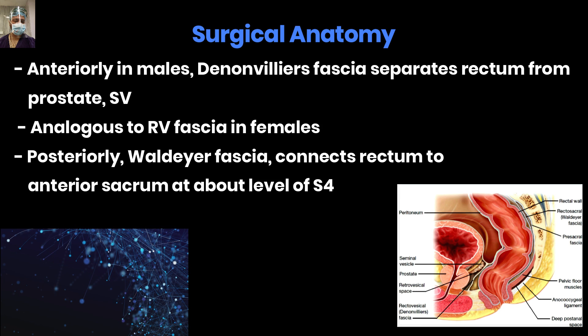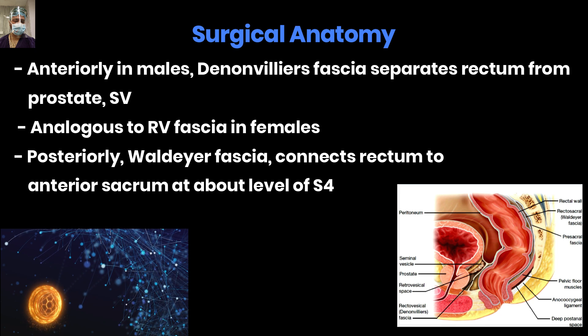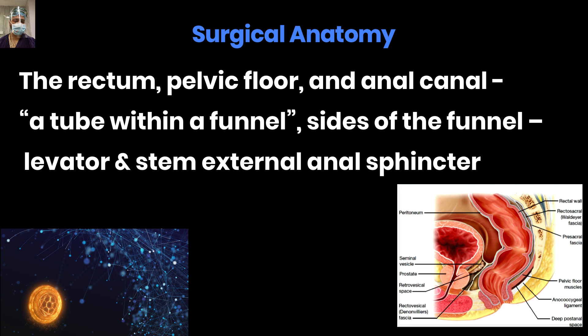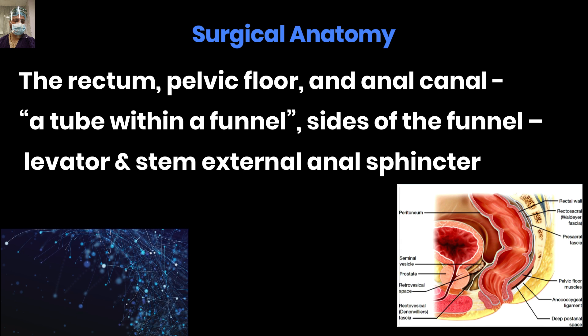Anteriorly in males, the Denonvilliers' fascia separates the rectum from the prostate and seminal vesicles, analogous to the rectovaginal fascia in females. Posteriorly, the Waldeyer's fascia connects the rectum to the anterior sacrum at about the level of S4. You must understand the concept of a 'tube within a funnel': the rectum and anal canal form the tube, the levator ani muscles form the sides of the funnel, and the external sphincter complex forms the narrow stem. Understanding this concept makes ELAPE and APR much clearer.